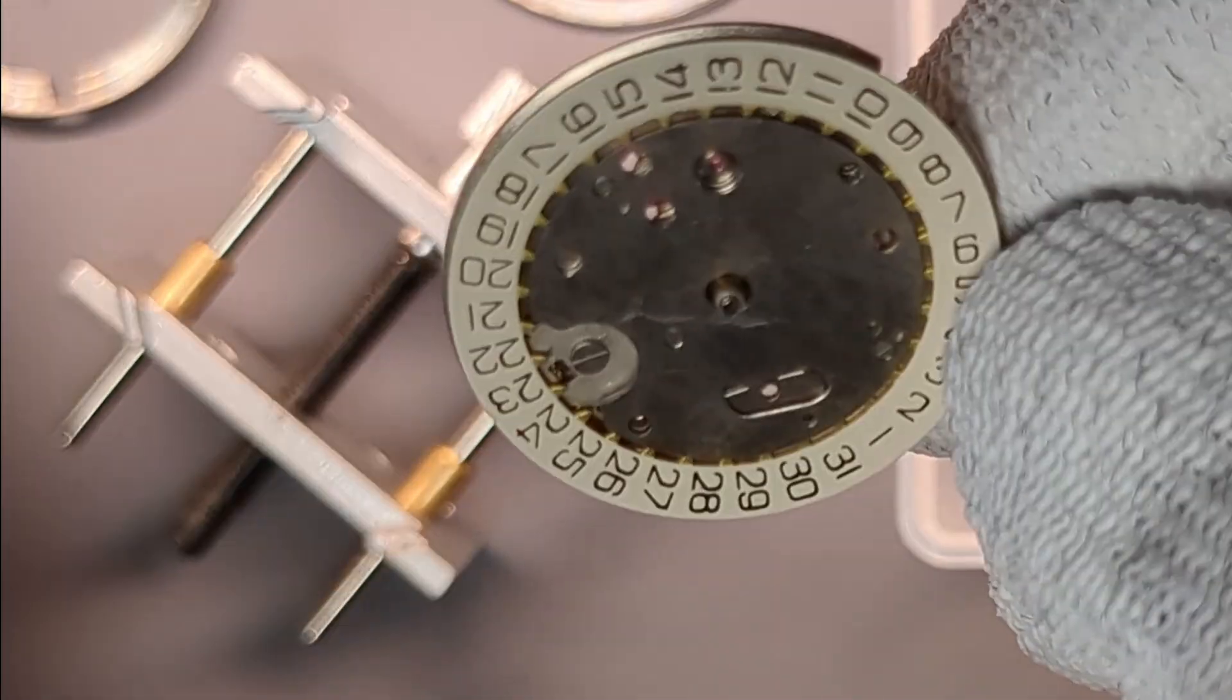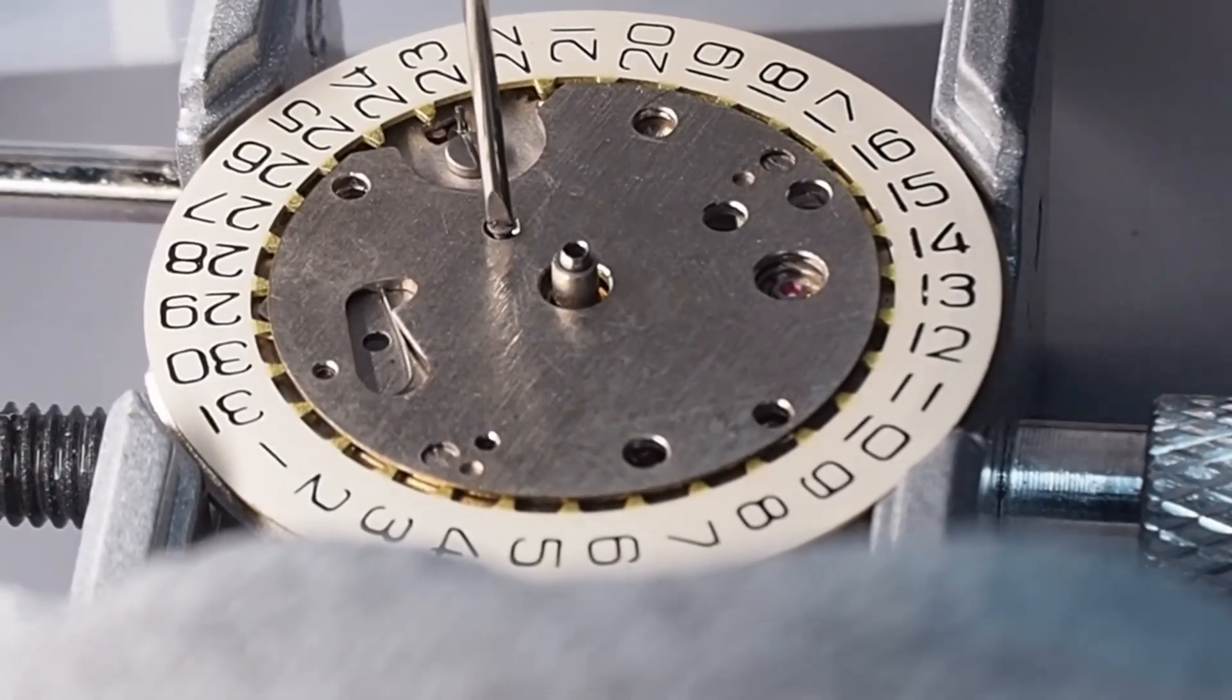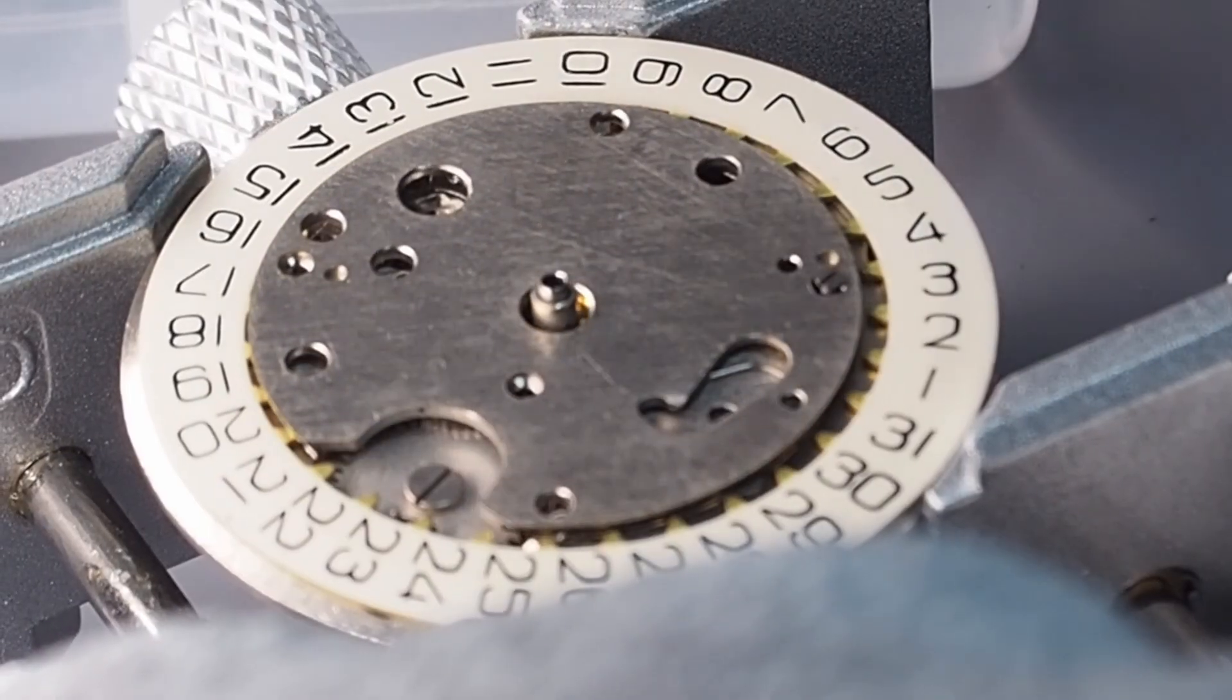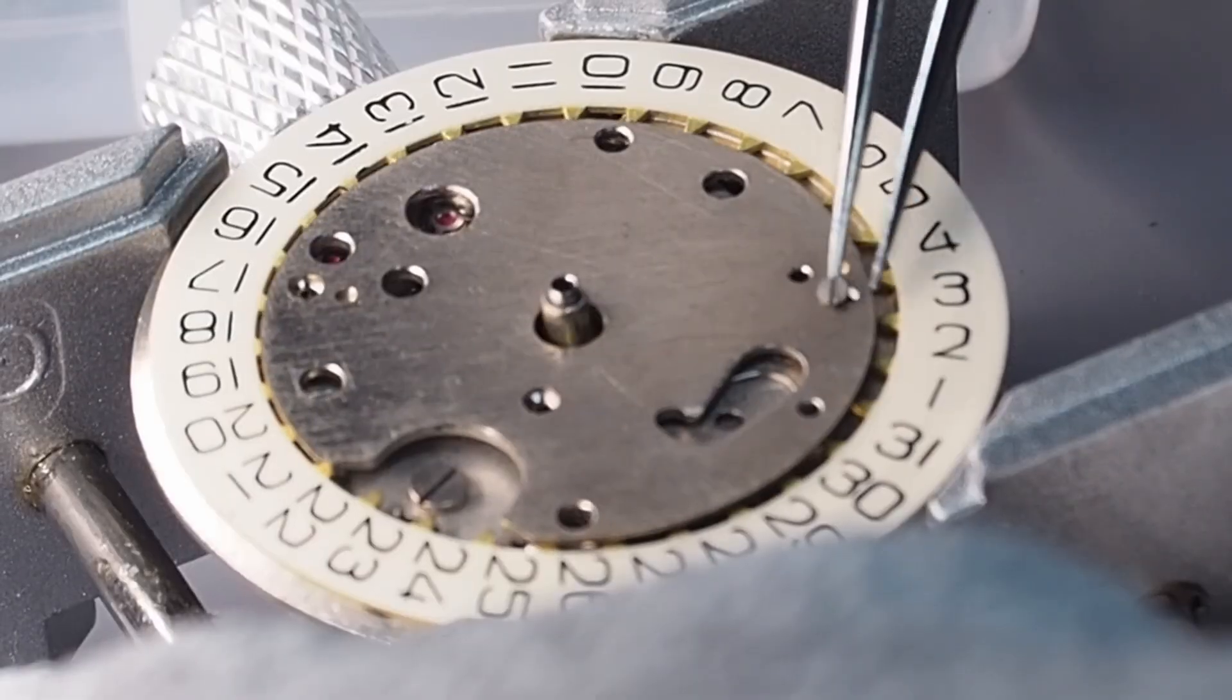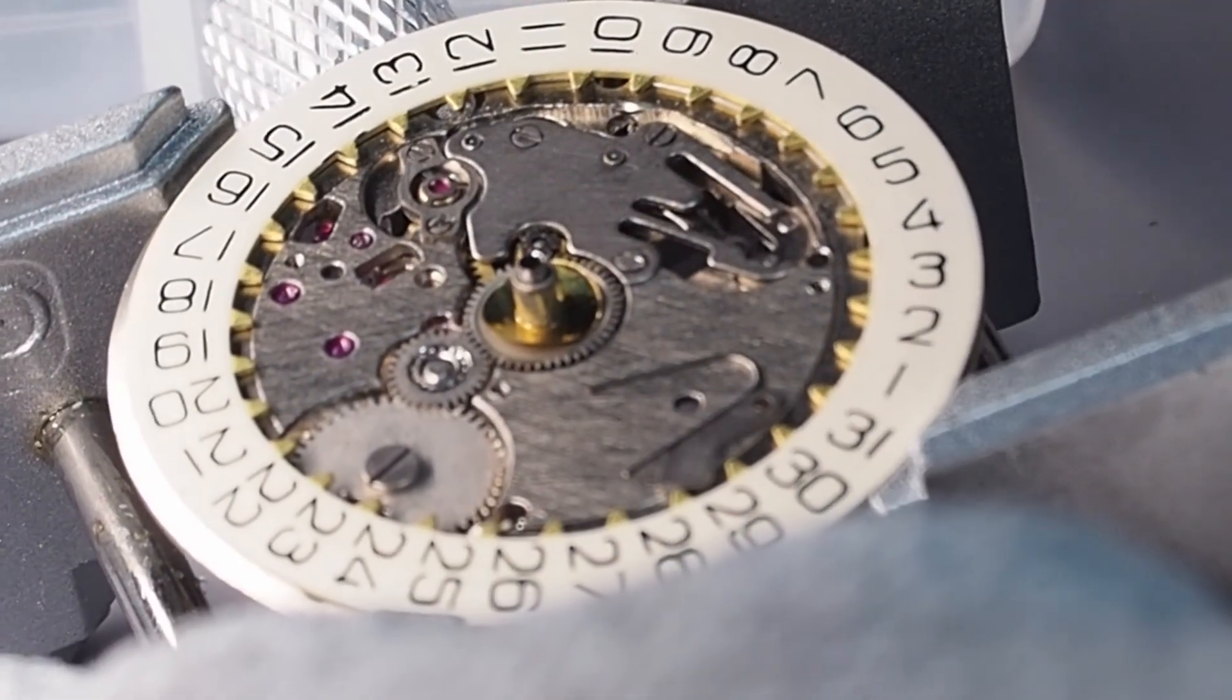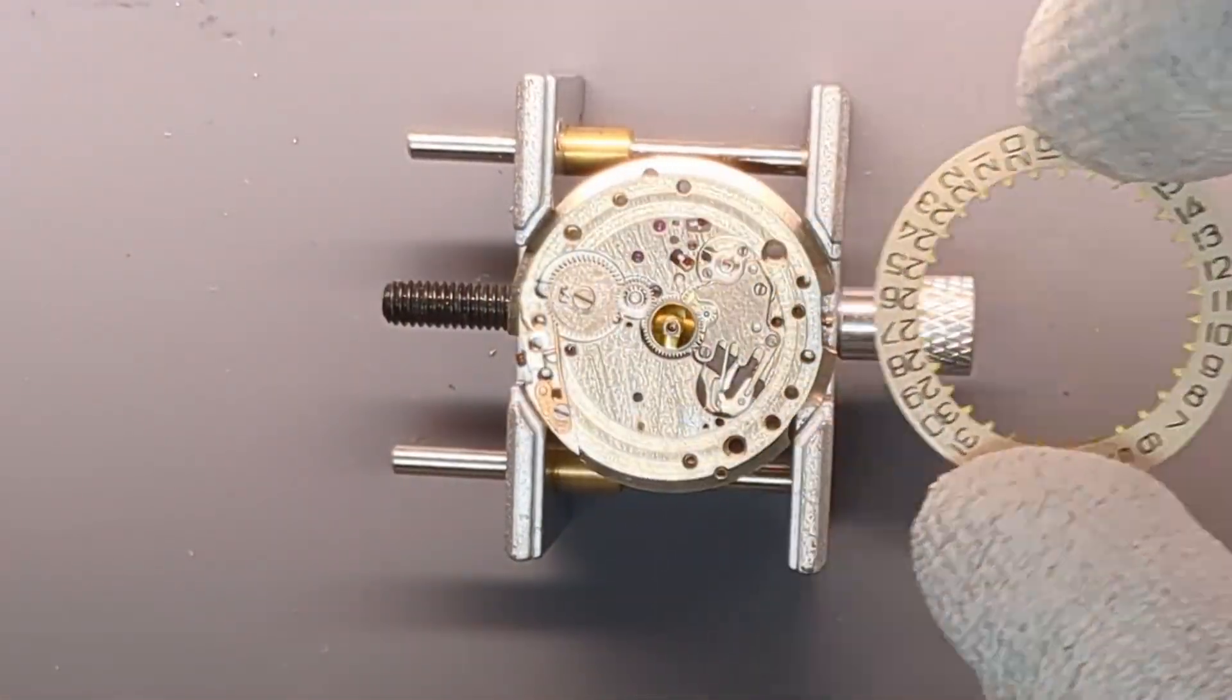Now, the dial is off, so I have access to the dial side. I'm removing the parts step by step. First, the thin cover plate over the date and keyless work. Now, we can see the date jumper spring and then the date jumper itself. We need to be very careful to not lose those parts.